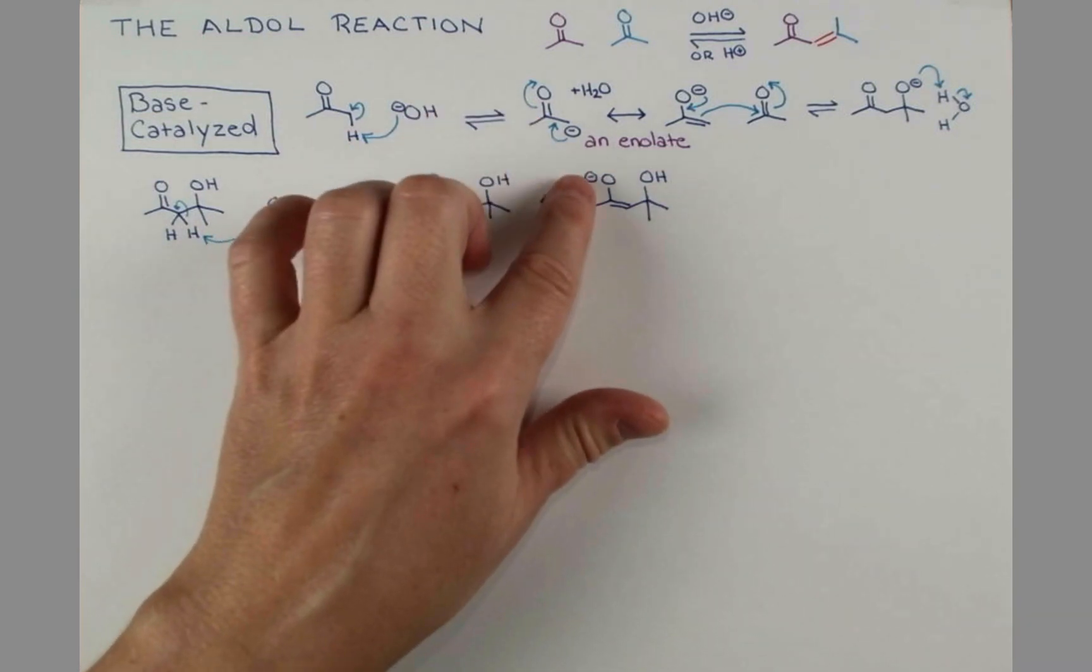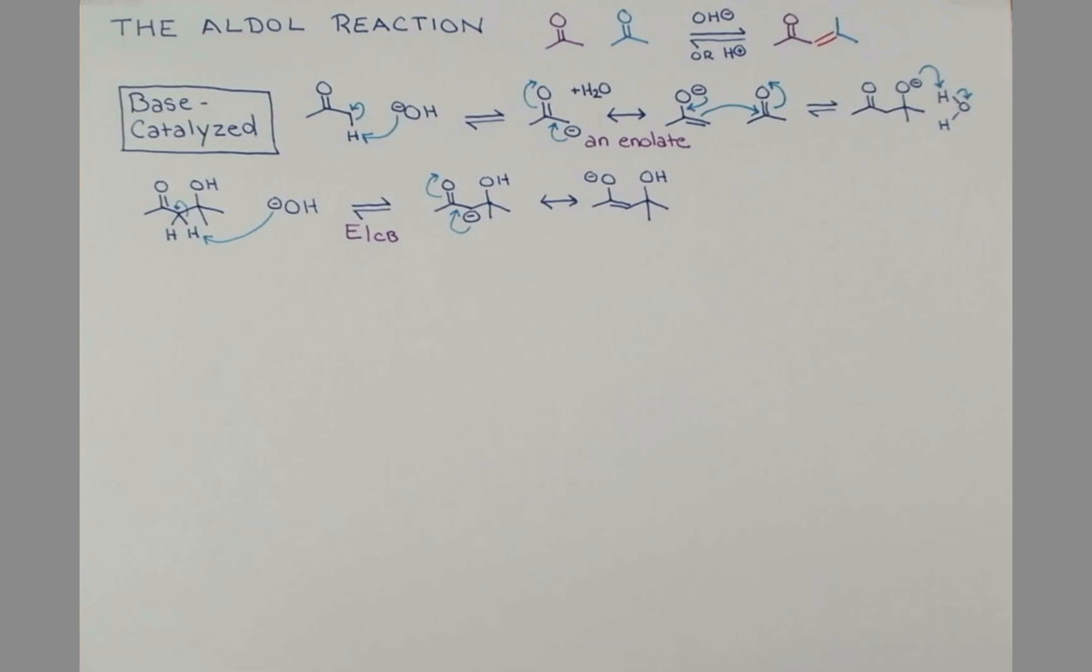And that's what allows this to happen and have hydroxide leave as a leaving group. With the negative charge built up on the molecule, we can push through all these bonds to show how the leaving group gets expelled. And this elimination gives the aldol product. And also gives a molecule of hydroxide.